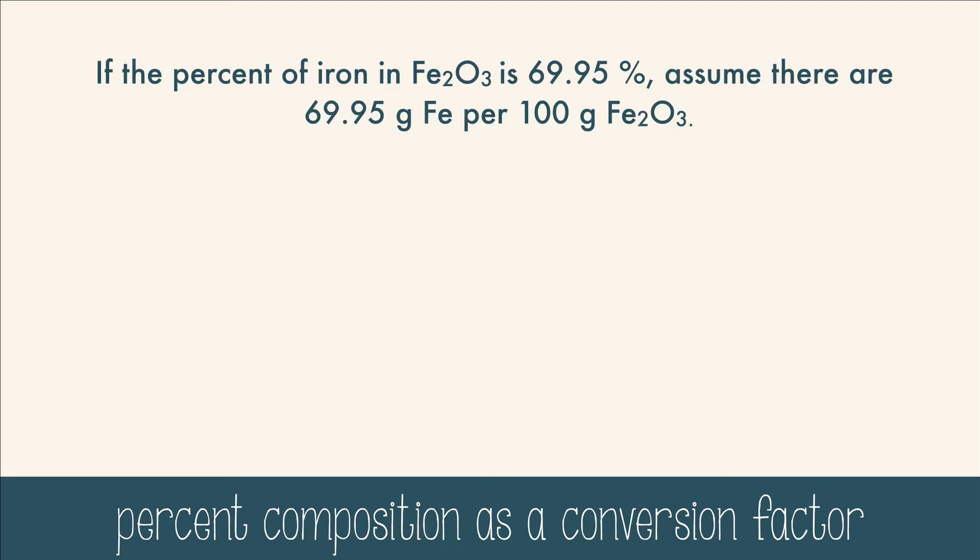So if the percent of iron in Fe2O3 is 69.95%, assume that there are 69.95 grams of iron per 100 grams of Fe2O3.